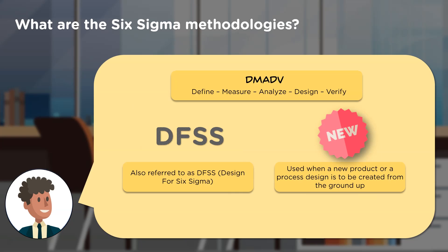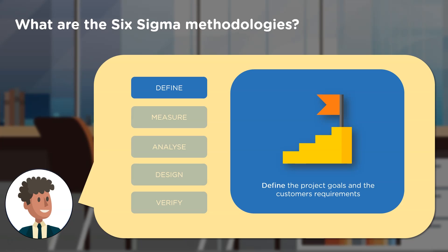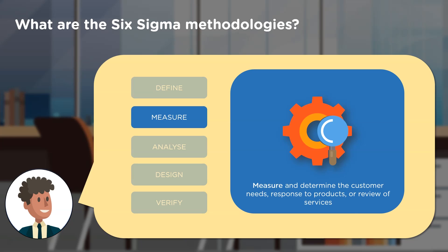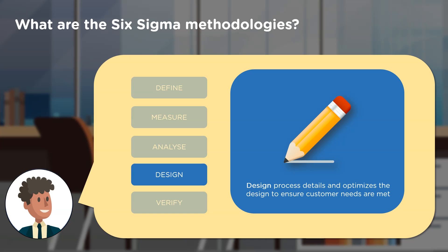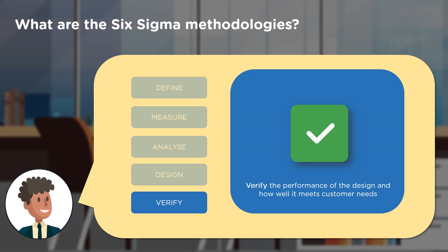Now let's have a look at DMADV — short for Define, Measure, Analyze, Design, and Verify — also known as DFSS or Design for Six Sigma. This is commonly used when companies have a new product that needs to be created from scratch. In the Define phase, you define the project goal and what customers require. In the Measure phase, you measure and determine customer needs and how they respond to your products. In the Analyze phase, you determine how to improve your product or service to better serve customers. In the Design phase, you set up process details and make optimizations to satisfy the customer. In the Verify phase, you check how well the design is working and how well it meets customer needs.